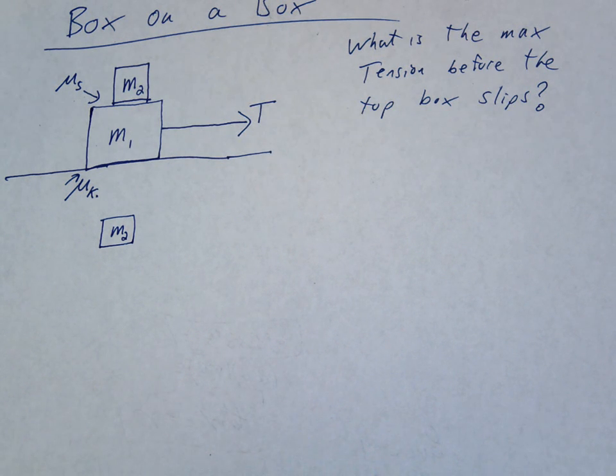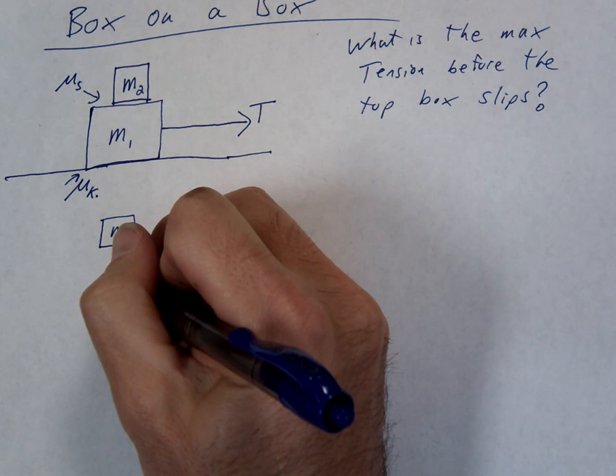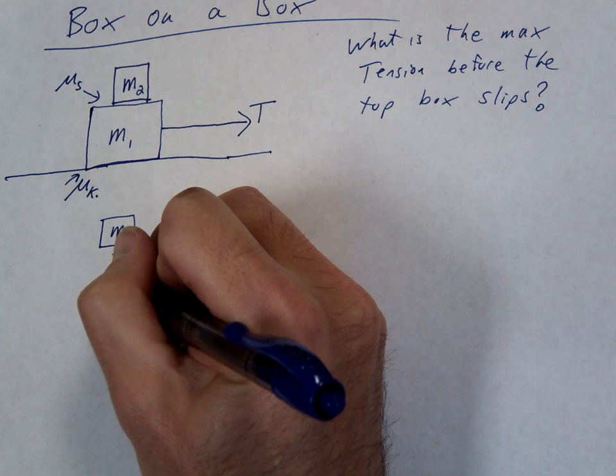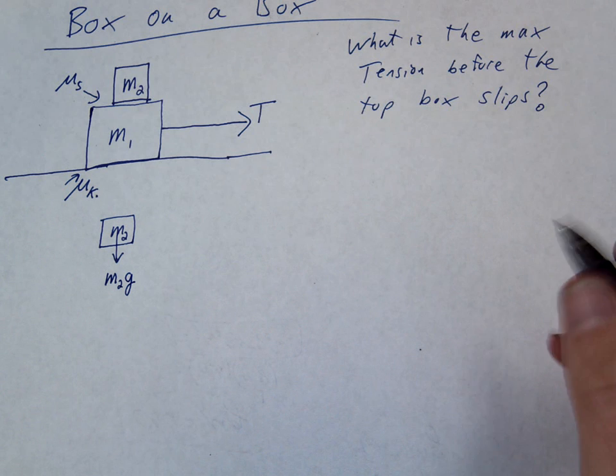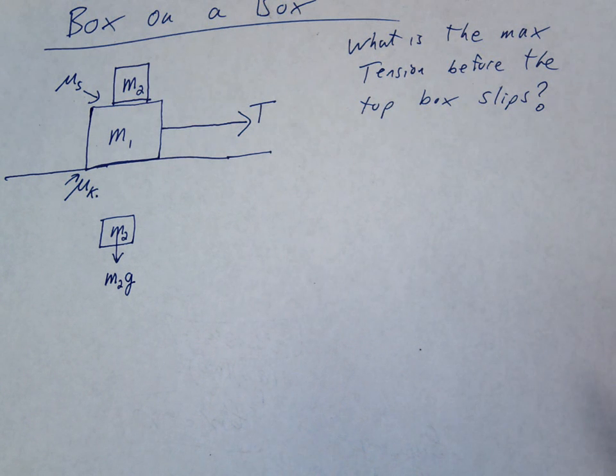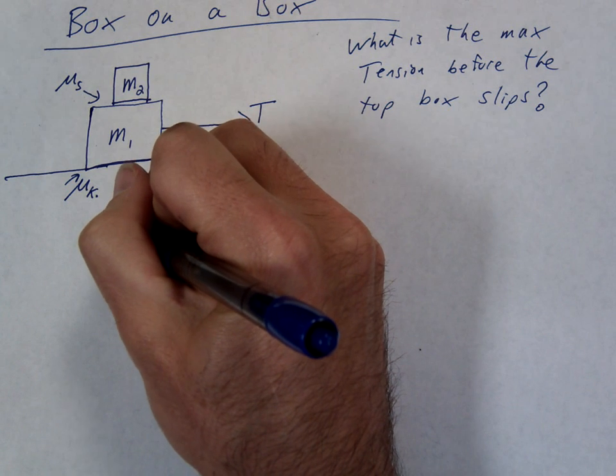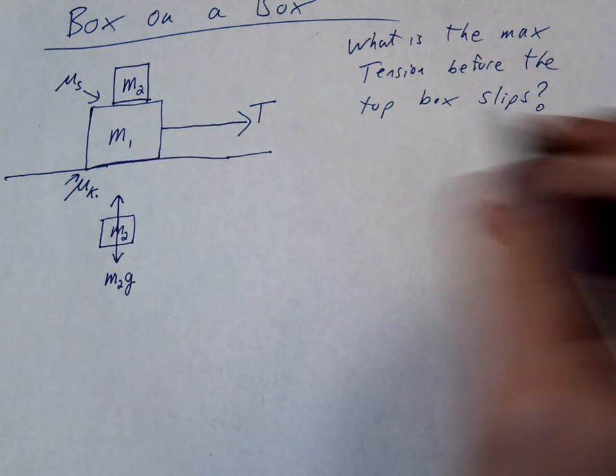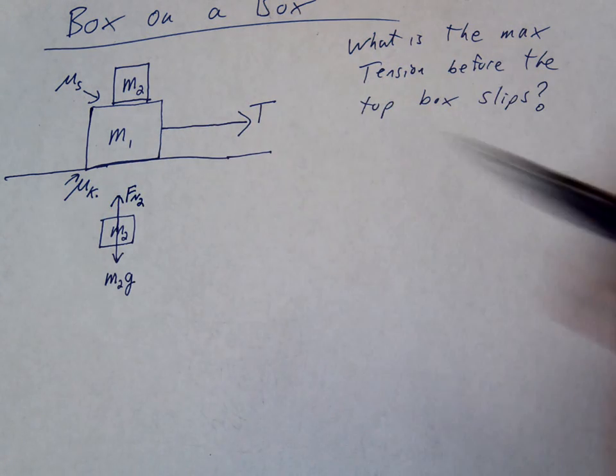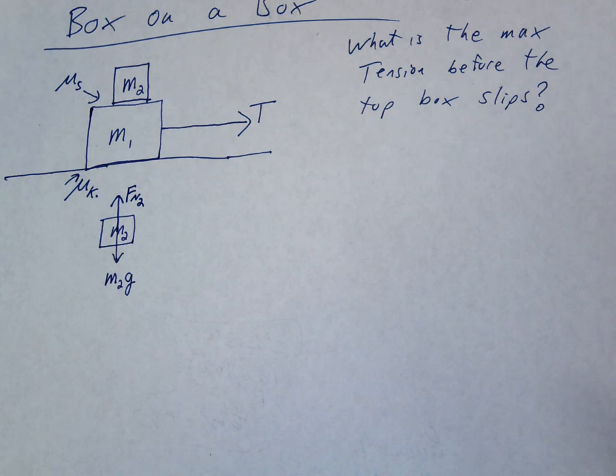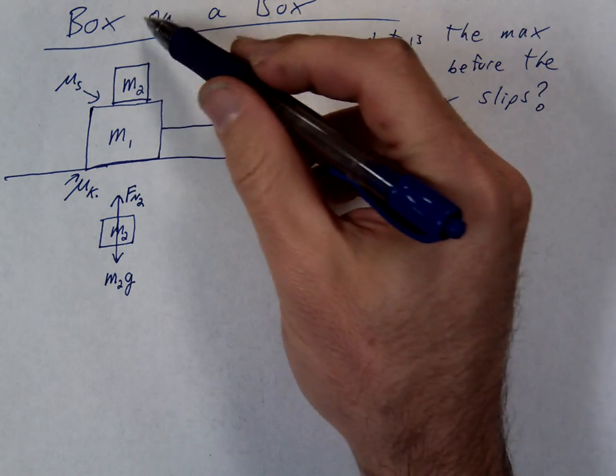Is there gravity acting on M2? I'm going to just call this M2G. You guys okay with that? You skipped a couple steps, right? FG is equal to MG, M2G. What's pushing back up? A normal force. We'll call this FN2. So this is the force from the bottom block pushing up on the top block.